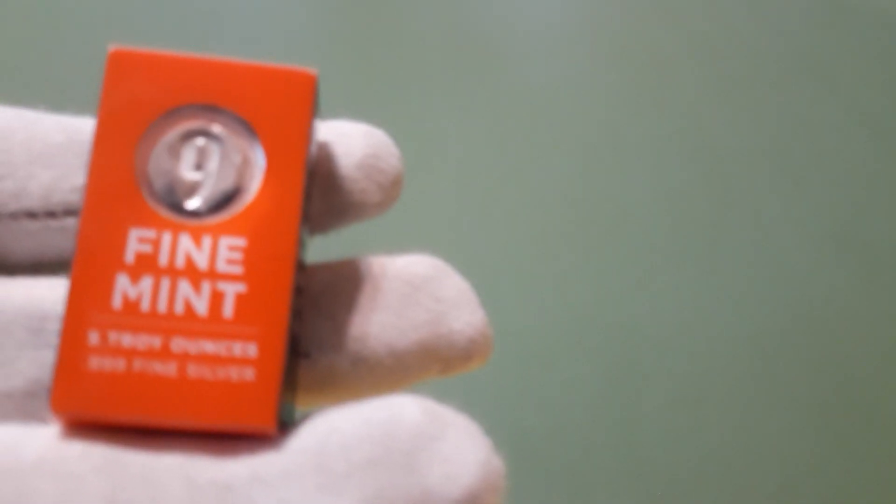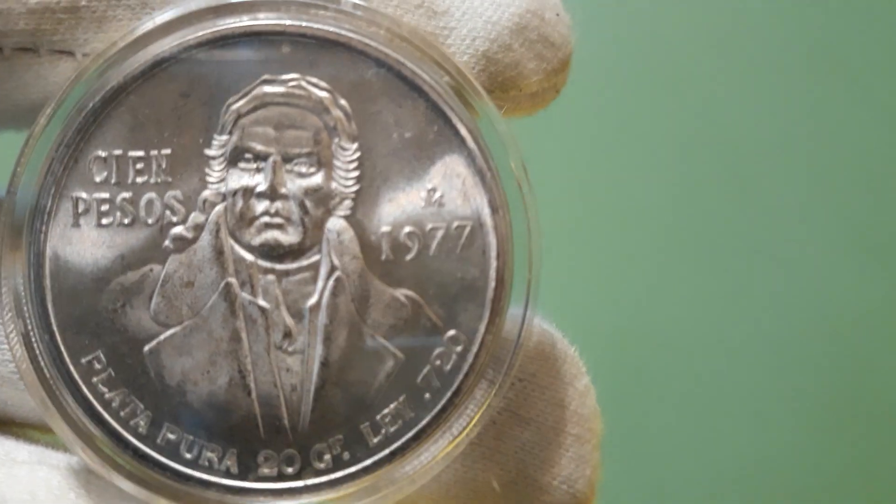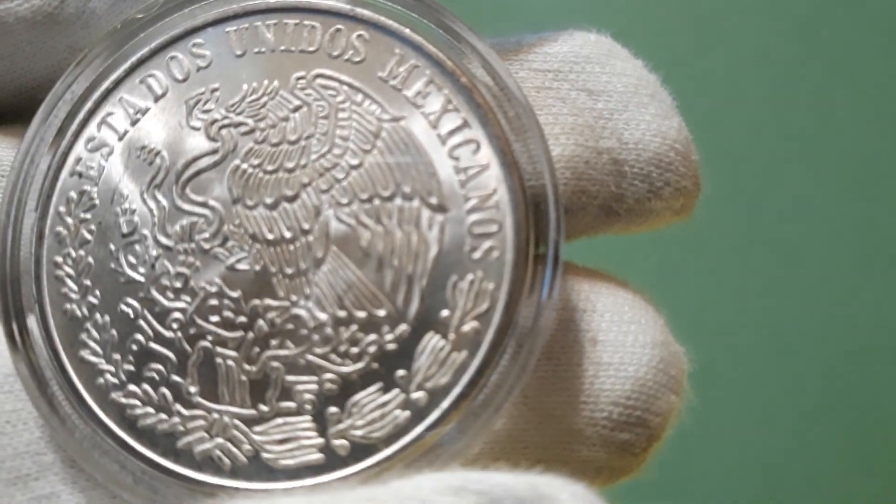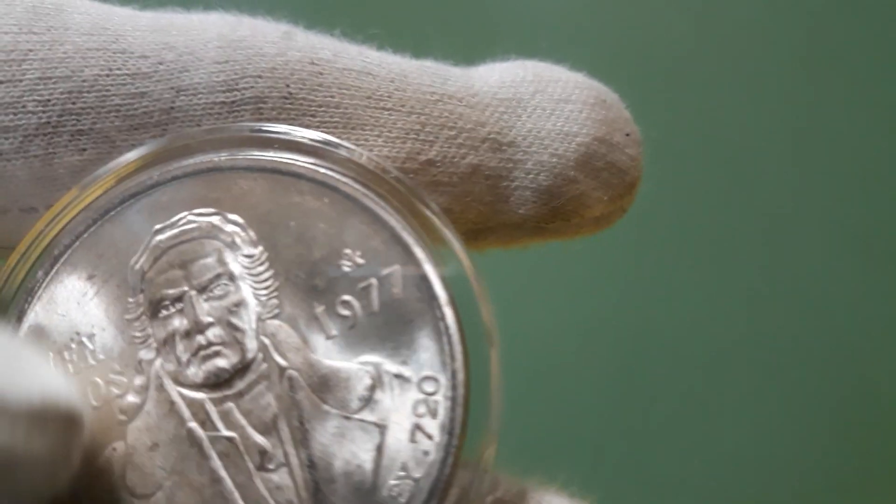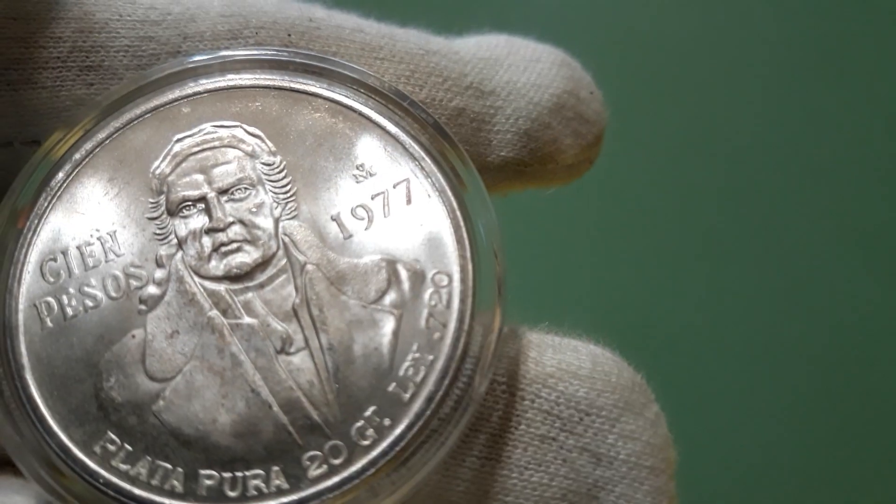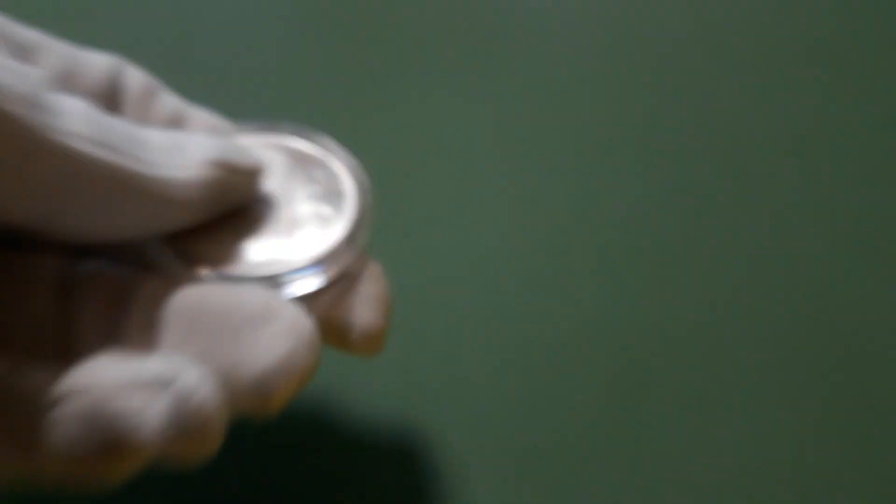So I went ahead and picked up a fine mint, 5 troy ounces. I had one of these 967, these are kind of cool, so I went ahead and picked up one of these. Seemed in a pretty nice shape, 9720. Let me grab that, let me grab this one.